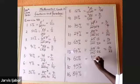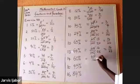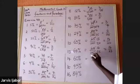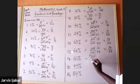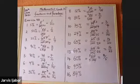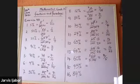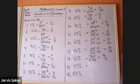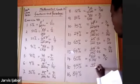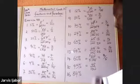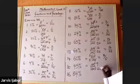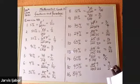60 over 100: cancel the zeros, 2 goes into 6 three times and 2 goes into 10 five times — that's 3 over 5. Then 45 over 100: 5 goes into 45 nine times, 5 goes into 100 twenty times — that's 9 over 20.